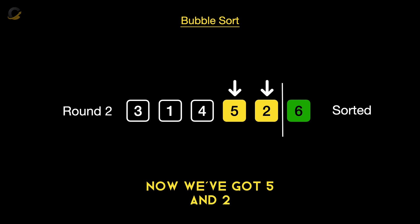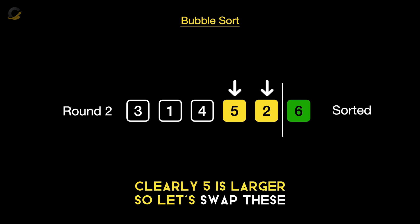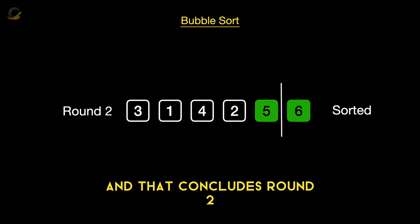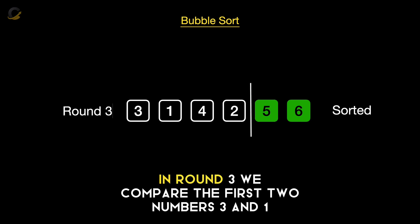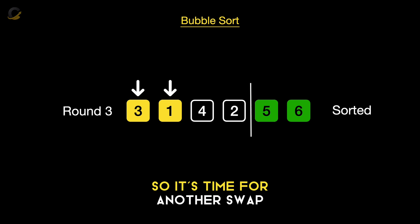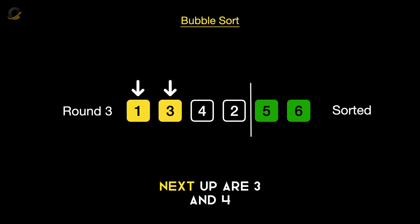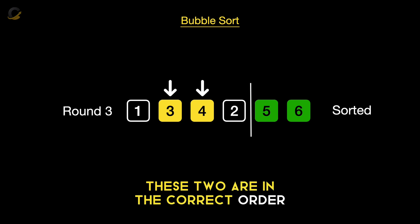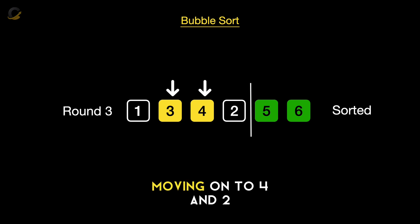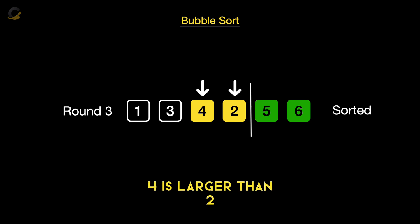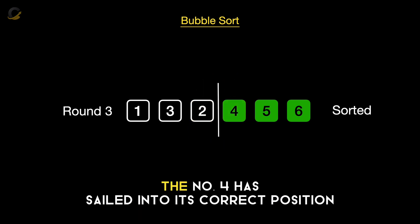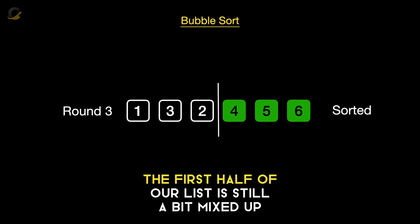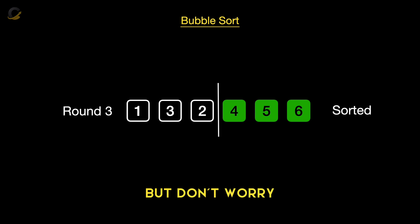Now we've got 5 and 2. Clearly 5 is larger, so let's swap. That concludes round 2 — we've successfully sorted another number and our list is getting closer to being fully sorted. In round 3, we compare the first two numbers, 3 and 1. Looks like 3 is bigger, so it's time for another swap. Next up are 3 and 4 — these two are in the correct order, no swapping needed. Moving on to 4 and 2 — 4 is larger than 2, so a swap is coming right up. And just like that, we've completed round 3. The number 4 has sailed into its correct position. The first half of our list is still a bit mixed up, but we're getting there.